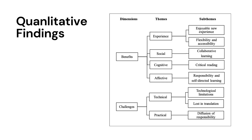For the qualitative findings, students identified two major dimensions towards virtual literature circles: benefits and challenges, further divided into several themes — experiential, social, cognitive, affective, technical, and practical. The sub-themes under benefits include: an enjoyable new experience, flexibility and accessibility of virtual literature circles conducted online, collaborative learning, the ability to facilitate critical reading, and the promotion of responsibility and self-directed learning.